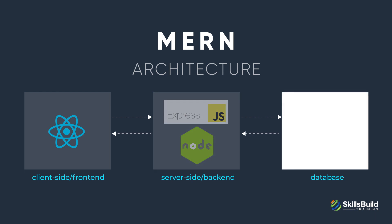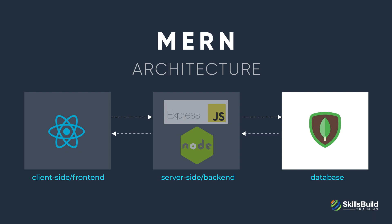Now let's talk about the database layer in detail. If your application stores any data such as user profiles, contents, comments, uploads, or events, you're going to want a database that's just as easy to work with as React, Express, and Node. That's where MongoDB comes in. JSON documents created in your React.js front-end can be sent to the Express.js server, processed, and stored directly in MongoDB for later retrieval. If you're building in the cloud, you'll want to look at Atlas — we'll talk about Atlas later in this video.